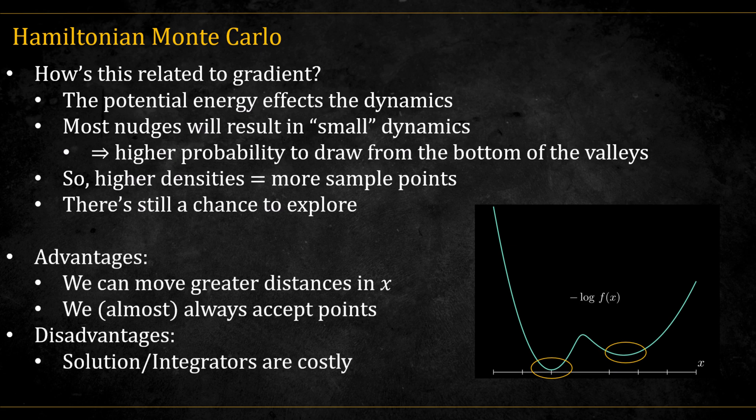The key advantage of Hamiltonian Monte Carlo is that it allows us to make large moves in x by sampling higher momenta, while still accepting almost all of the proposed points. The trade-off is that solving the dynamics requires more computation, that is the leapfrog step is also costly.